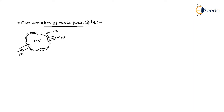The conservation of mass for a control volume says that the net mass transfer to or from a control volume during a time interval delta t is equal to the net change — that means increase or decrease — in the total mass within the control volume during time delta t.